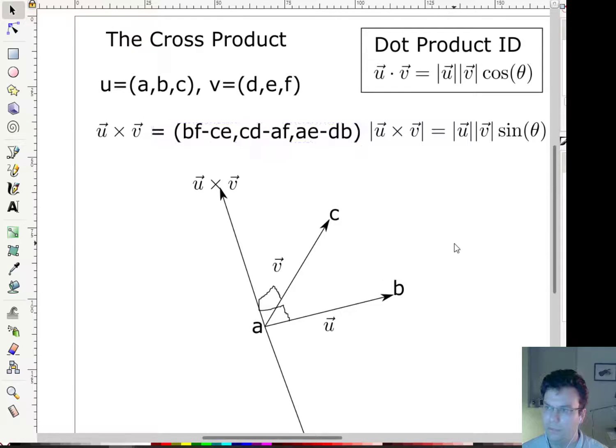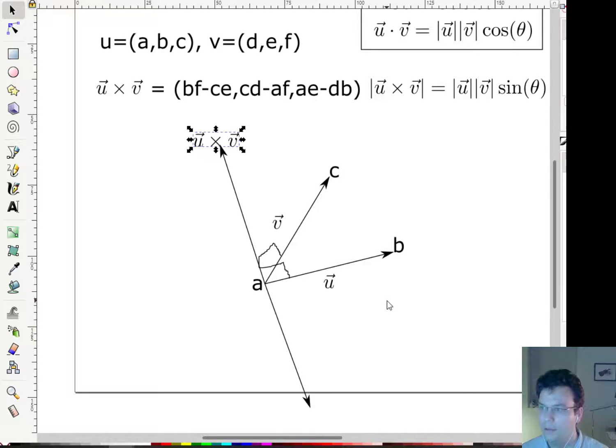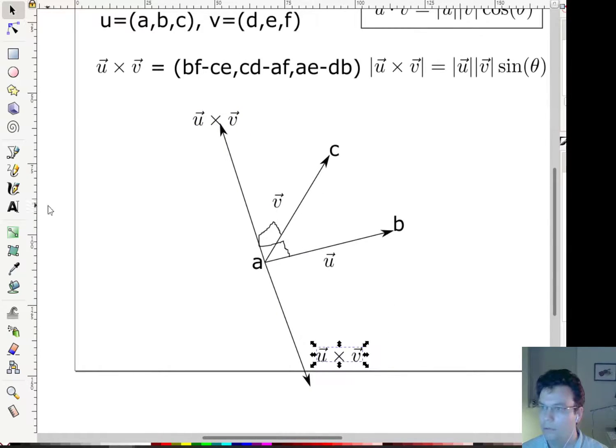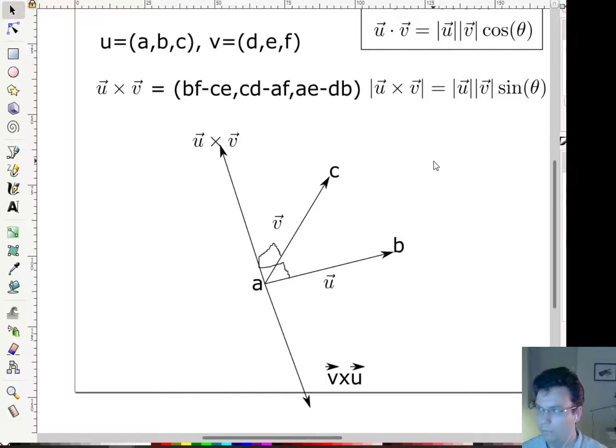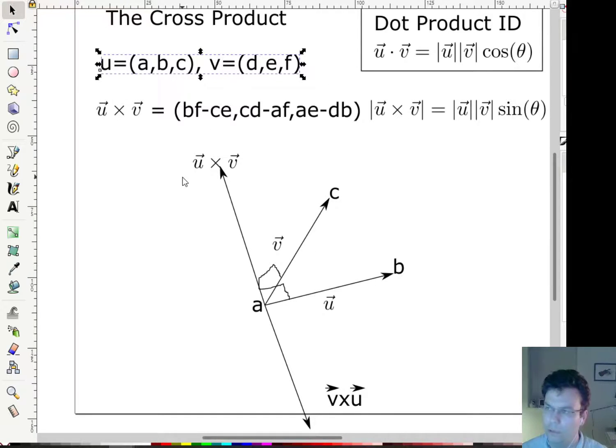So it turns out the way that this is defined, we follow something called the right-hand rule. So this is actually not u cross v. This is actually v cross u. So this is interesting. So the cross product is not commutative. What that means is, unlike the dot product, the order actually matters. So the dot product didn't matter if I took v dot u or u dot v, it was going to give me the same answer. Not true of the cross product.